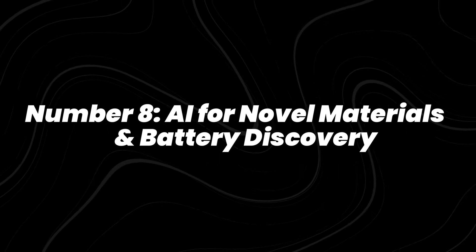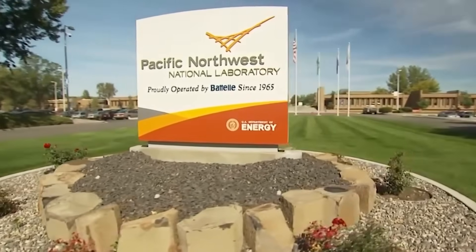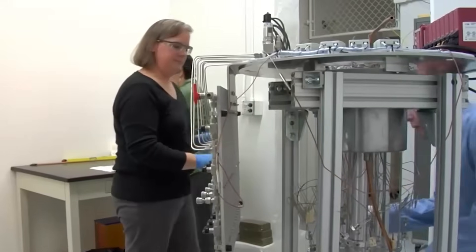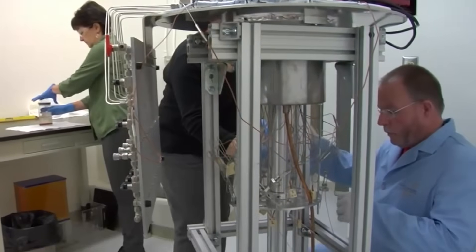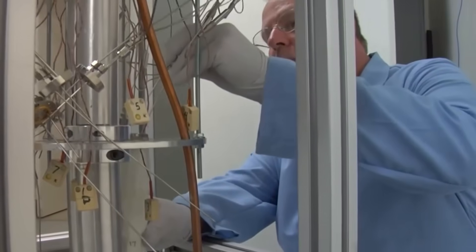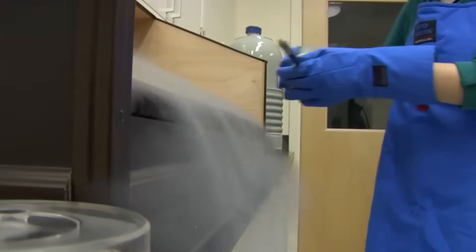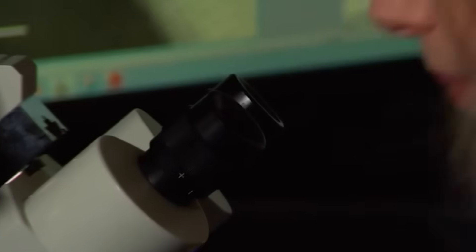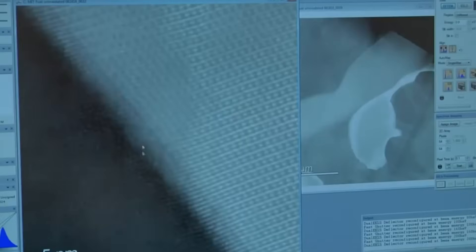Number 8, AI for Novel Materials and Battery Discovery. This is where AI starts inventing things from scratch. Microsoft and the U.S. Department of Energy's Pacific Northwest National Lab recently trained a generative model that identified a new battery material in under 80 hours, a process that usually takes researchers a decade.